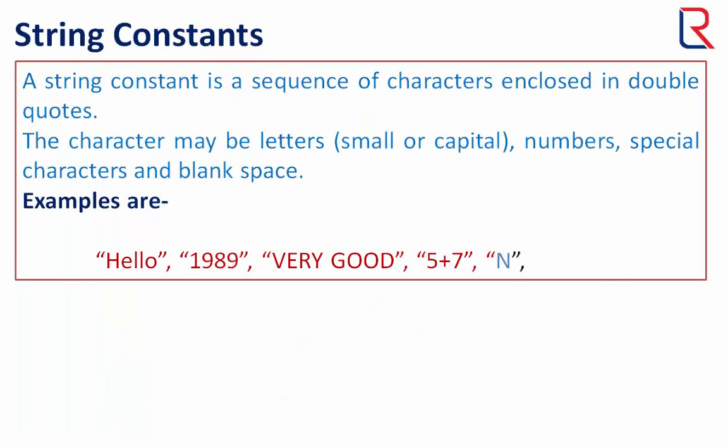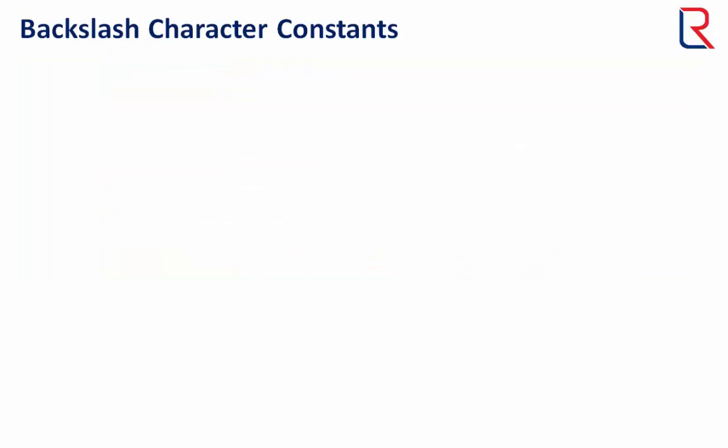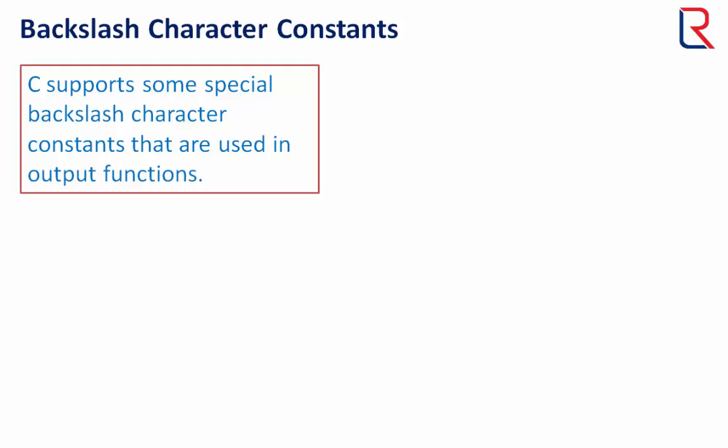String constants: A string constant is a sequence of characters enclosed in double quotes. The characters may be letters, numbers, special characters, and blank spaces. C supports some special backslash character constants that are used in output functions.